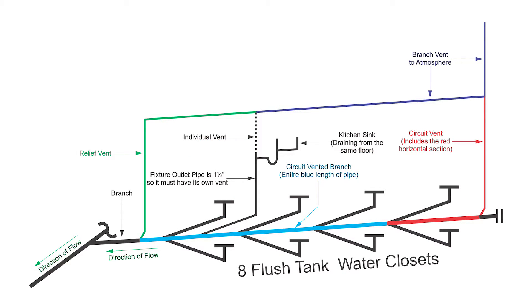Now just for clarity, let's look at this picture. I have eight flush tank water closets and a kitchen sink draining into the circuit vented branch. Now the eight flush tank water closets are circuit vented because they don't have any vent other than the circuit vent itself. But the kitchen sink has its own individual vent that is not considered to be a circuit vented fixture. So there are only eight circuit vented fixtures in this diagram.